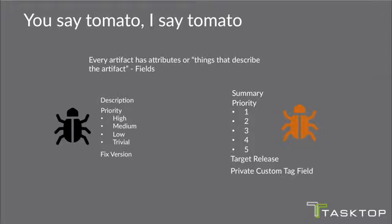You say tomato, I say tomato. Every artifact in every different system has some special characteristics — it's a little bit different between systems. In particular, they tend to have different definitions of the fields that make up that artifact. For example, a defect on the left has description, priority with values high/medium/low/trivial, and fixed version. Whereas the defect on the right has a field called summary instead of description, priority expressed as five numbers instead of four, and it's called target release rather than fixed version, with additional fields too. So this presents a challenge for us.